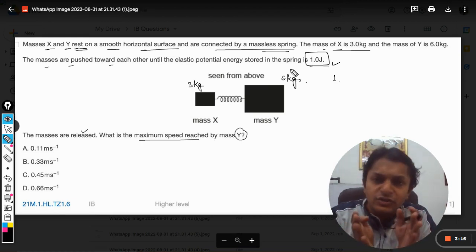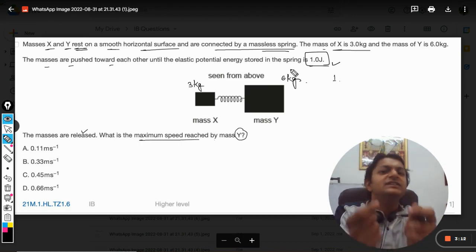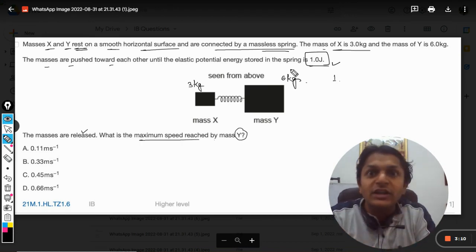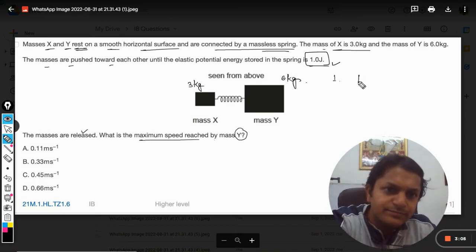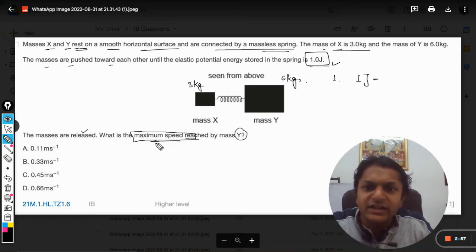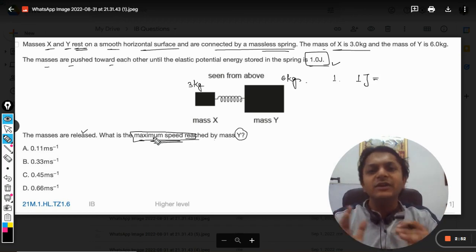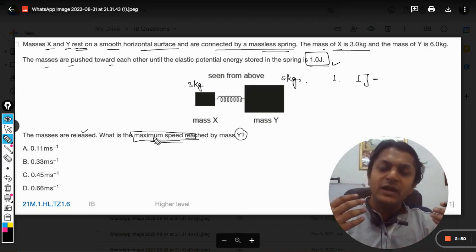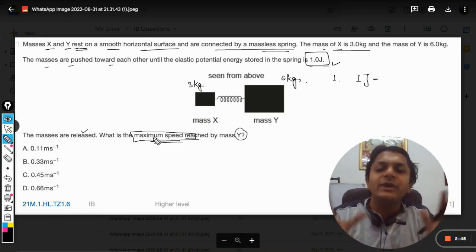The kinetic energy of both bodies is zero. The potential energy is 1 joule. So the total energy before releasing the masses is 1 joule. When we release them, we want to find the maximum speed reached. Maximum means the complete elastic energy has been converted into kinetic energy, so the elastic energy stored in the spring now becomes zero.